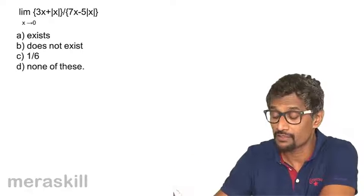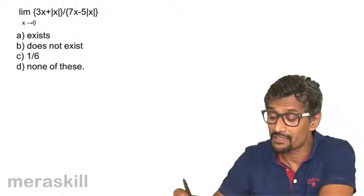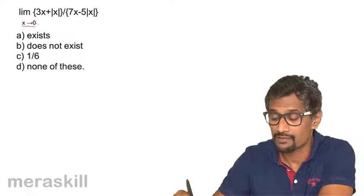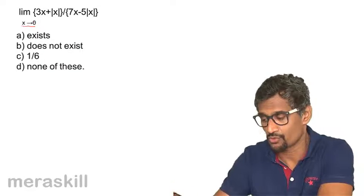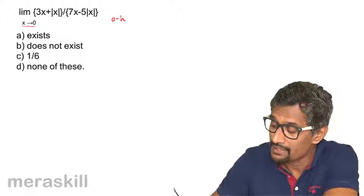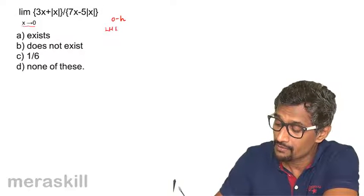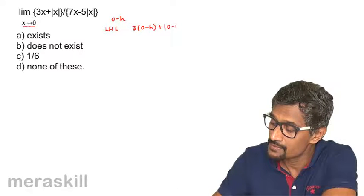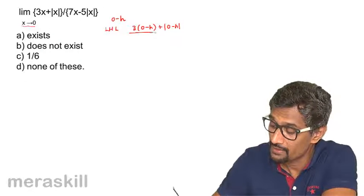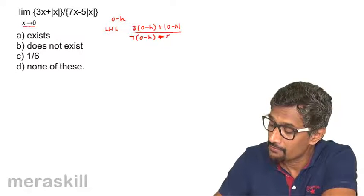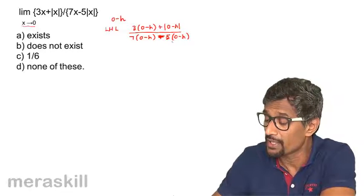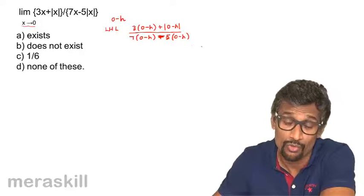We have to check whether this particular function has a limit when x is equal to 0. Consider any value of x slightly less than 0, so we take 0 minus h. The left-hand limit will be 3 times (0 minus h) plus the absolute value of (0 minus h), all divided by 7 times (0 minus h) minus 5 times (0 minus h), where h can be any small value like 0.001.